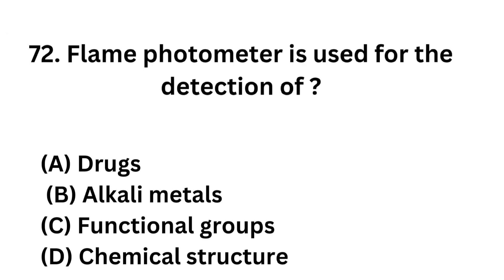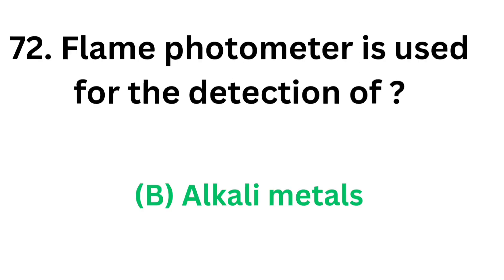Question number 72. A flame photometer is used for the detection of: Option A: Drugs. Option B: Alkali metals. Option C: Functional groups. Option D: Chemical structure. The correct answer is Option B: Alkali metals. A flame photometer is used for the detection of alkali metals.